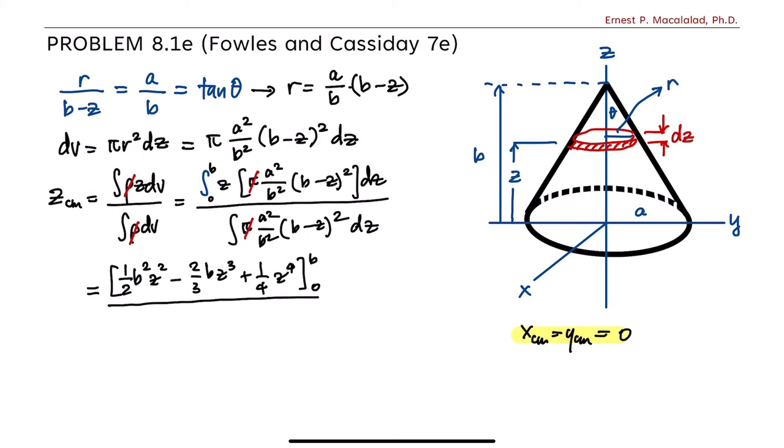And here we divide it by b squared z minus b z squared plus 1 third z cubed evaluated from 0 to b. Doing the evaluation, this will now be equal to b to the fourth over 12 divided by b cubed over 3, which will give us the value of zcm to be b over 4.